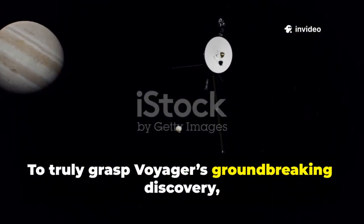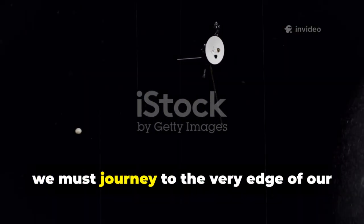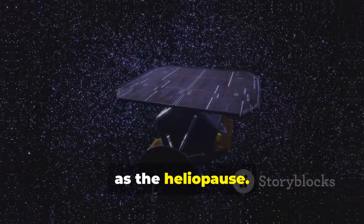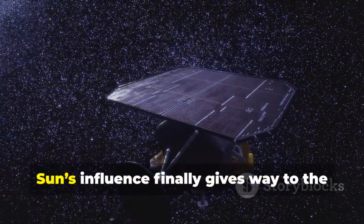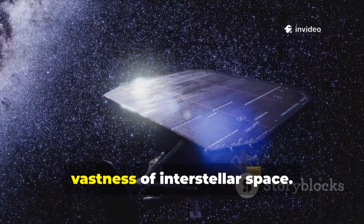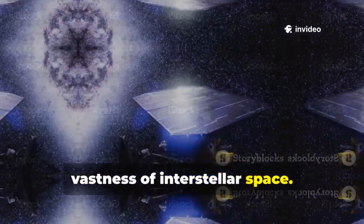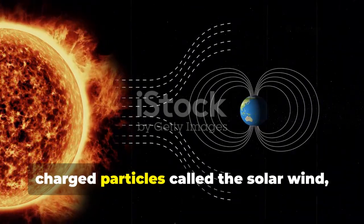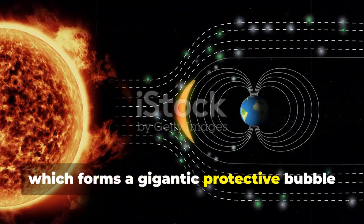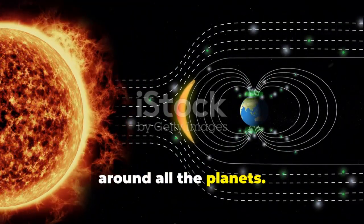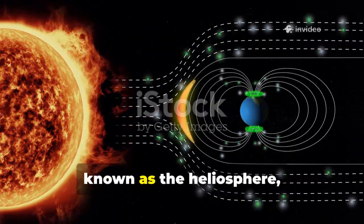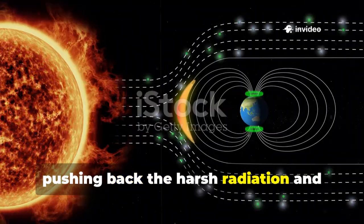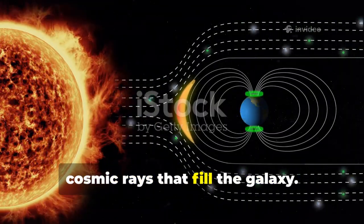To truly grasp Voyager's groundbreaking discovery, we must journey to the very edge of our solar system, a mysterious frontier known as the heliopause. This is the invisible boundary where the sun's influence finally gives way to the vastness of interstellar space. The sun constantly emits a stream of charged particles called the solar wind, which forms a gigantic protective bubble around all the planets. This bubble, known as the heliosphere, acts as a shield, pushing back the harsh radiation and cosmic rays that fill the galaxy.